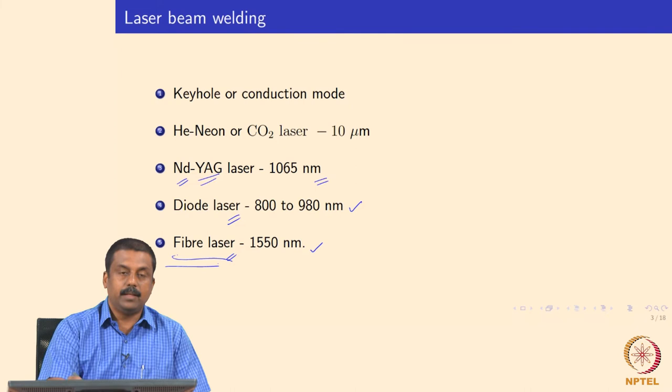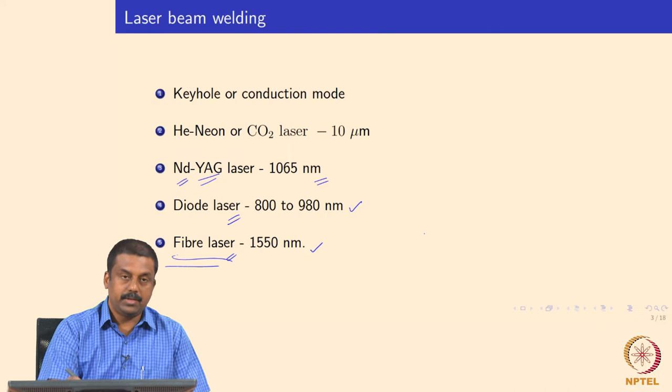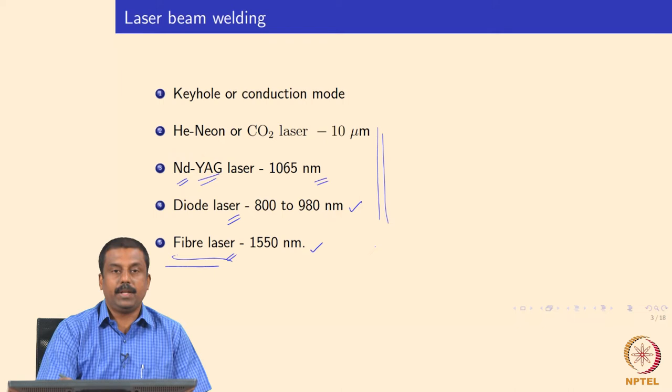Fiber lasers produce very stable light over the years. For high-productivity jobs, especially in automotive industry laser welding applications, the fiber laser can give a very stable beam day in and day out without losing its wattage significantly. Other types of lasers have a lifetime based on usage — they generally deteriorate over time because of the excitations used to generate the laser.